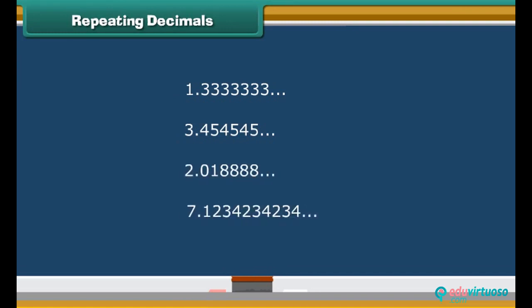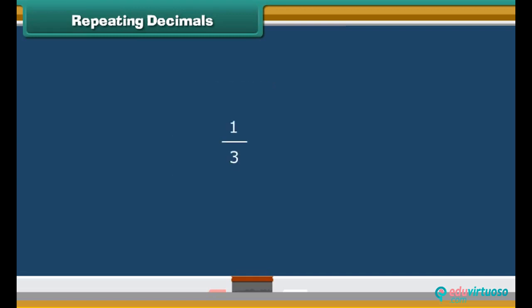Some decimals don't stop and go on adding numbers to the right forever. Look at the decimal numbers of the fraction 1 by 3. What did you notice? It starts with 0.33333 and just keeps on going on and on. So, these decimals are termed as repeating decimals.